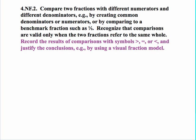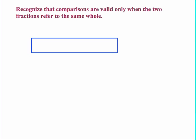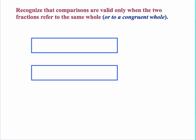The last statement, dealing with recording results using symbols and visual models, will be addressed throughout the video. Now, regarding the statement that comparisons are valid only when the two fractions refer to the same whole — in reality, we're often dealing with more than one figure, so we're actually dealing not just with the same whole, but a lot of times with a congruent whole. Students should think of it this way: comparisons are valid only when the two fractions refer either to the same whole or to congruent wholes.